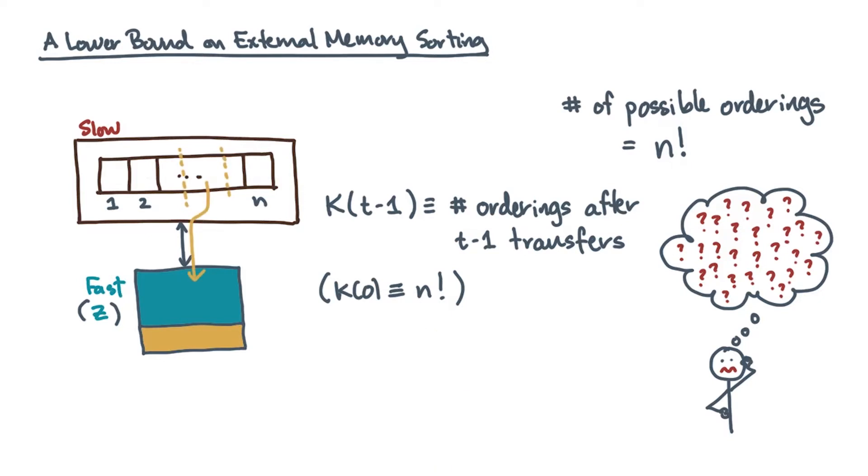Suppose that after you do t minus 1 reads, you now do another read of block size l from slow memory to fast memory. If you've never seen these items before, then there are l factorial ways in which you can order them.